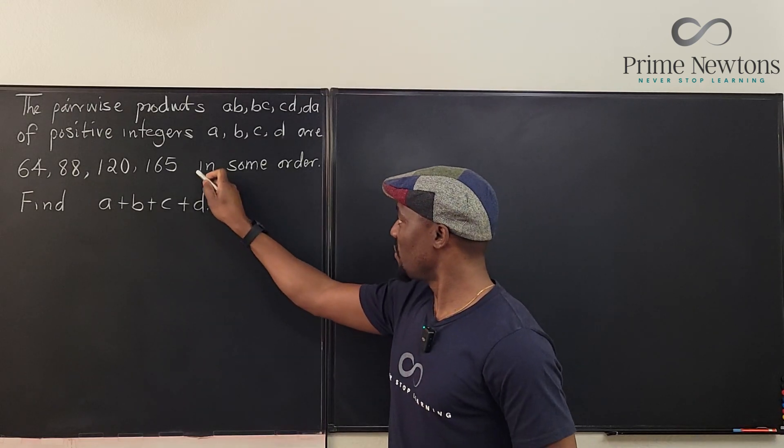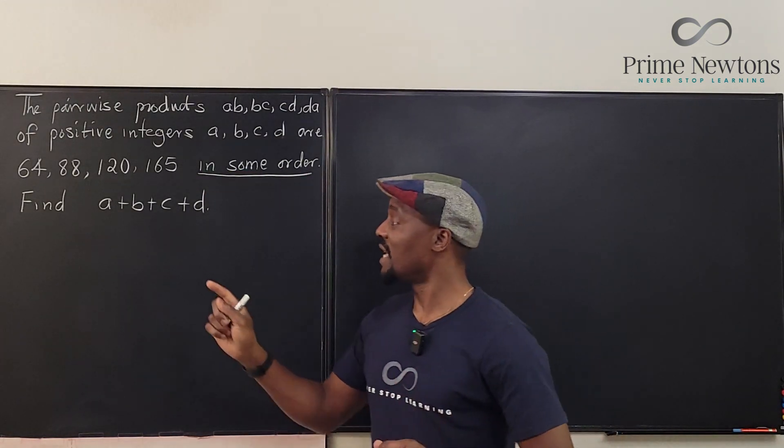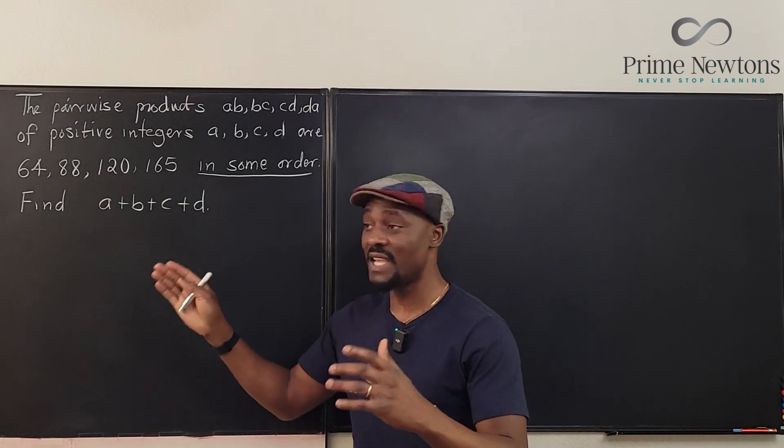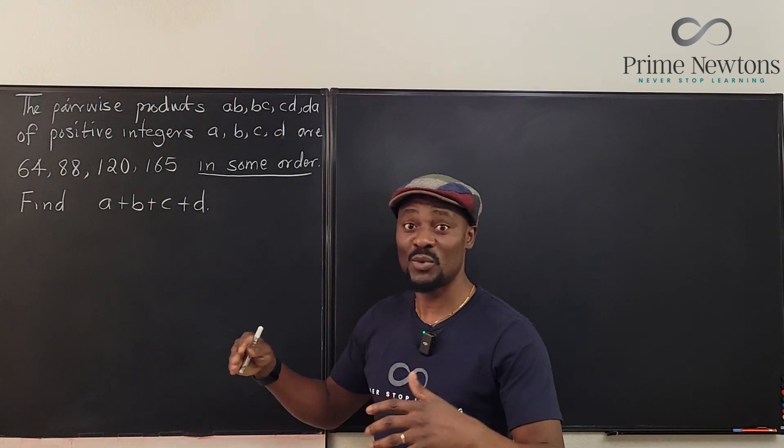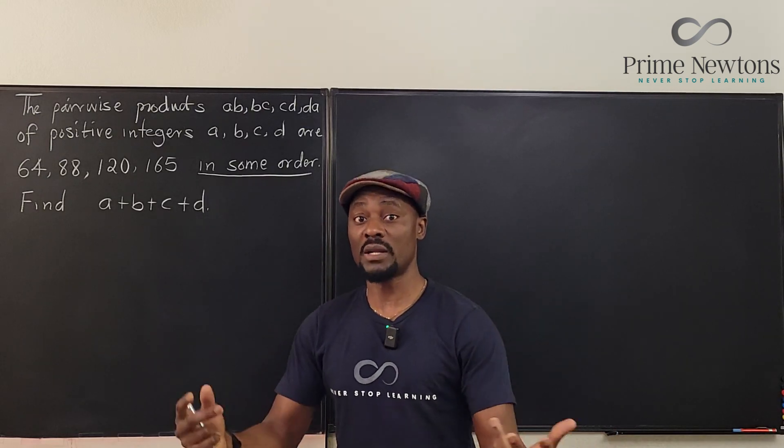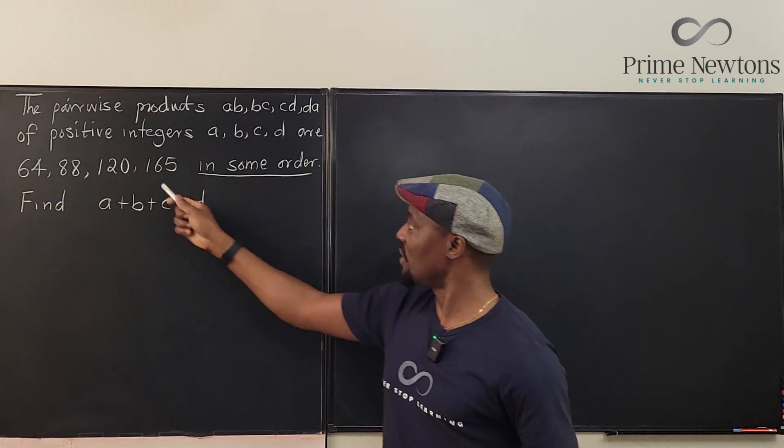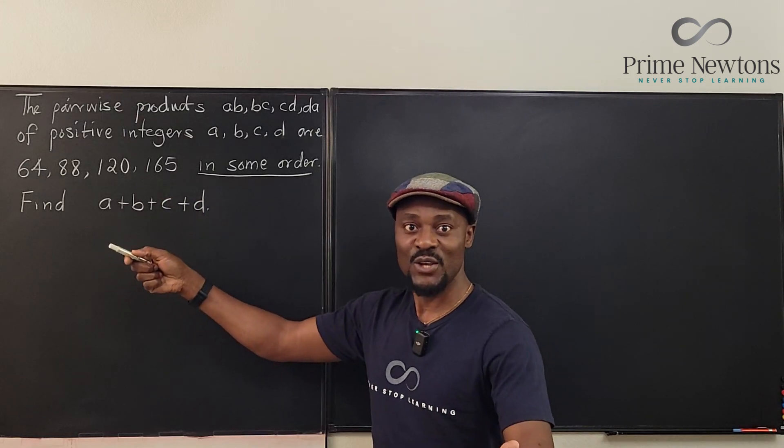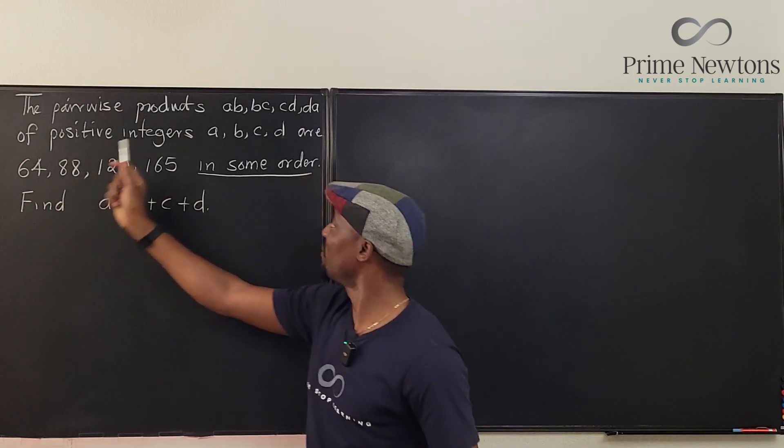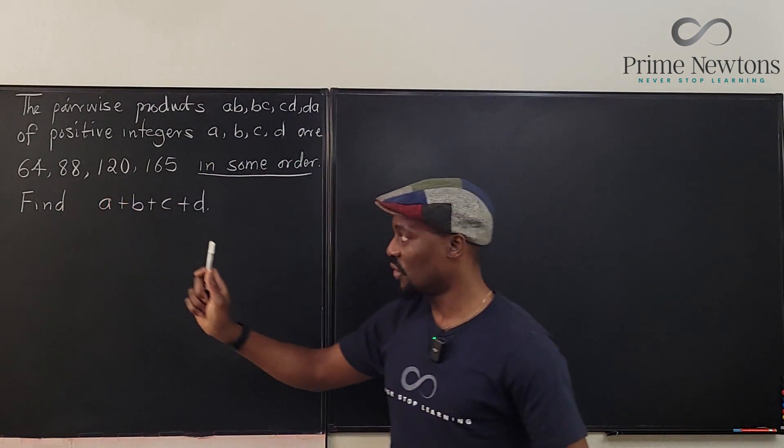This is the problem with the question because you do not know which one is 64, which one is 88, which one is 120, or which one is 165, but you know that all the pairwise products are going to be these four, but you just cannot tell. The word is not respectively, so I really don't know what gave me 64.